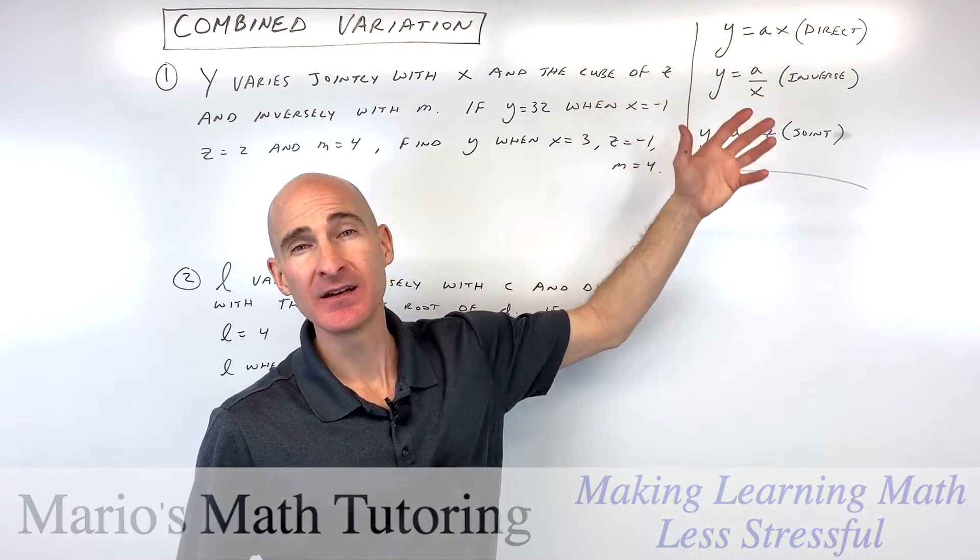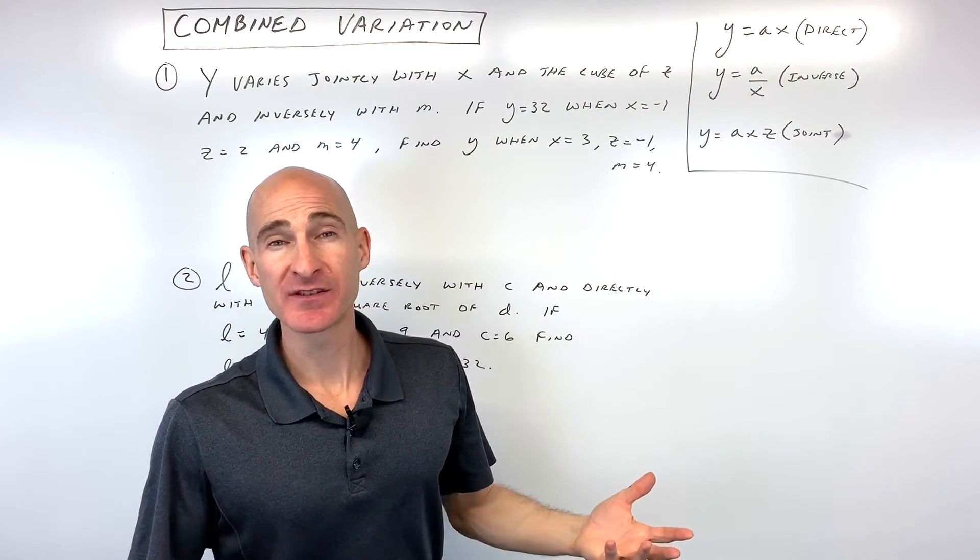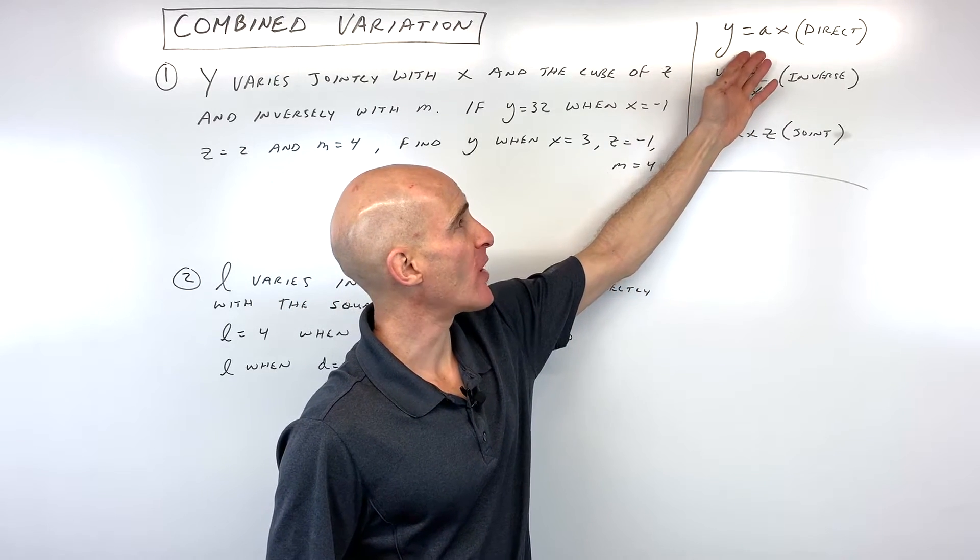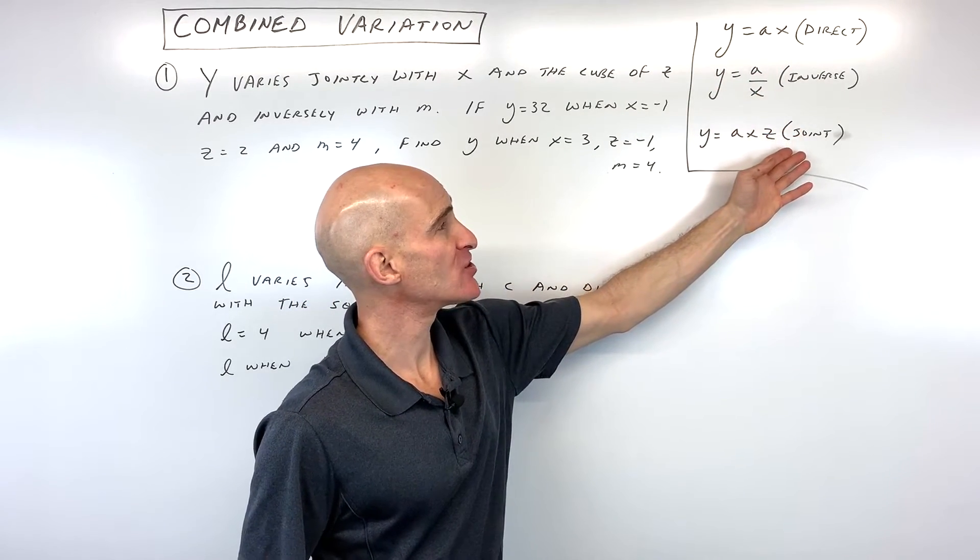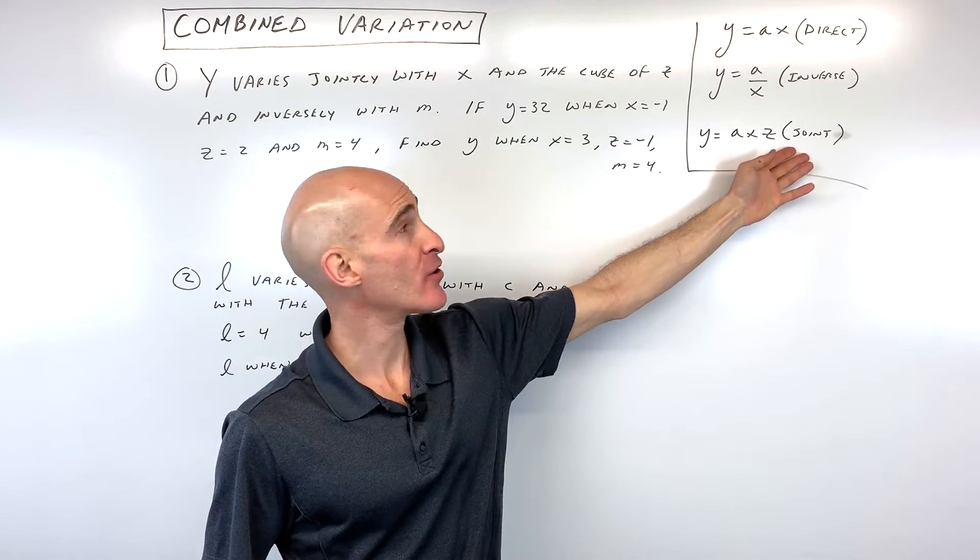Combined variation is when you're combining one or more types of variation. For example, direct variation, inverse variation, or joint variation.